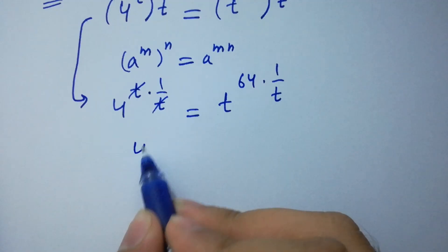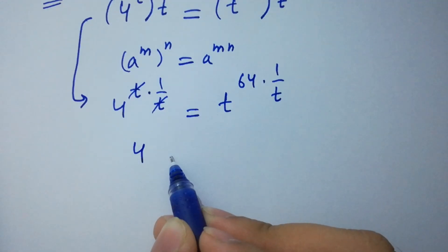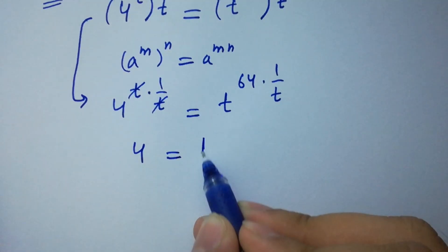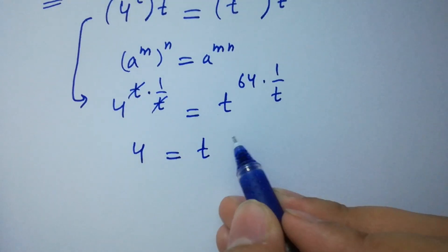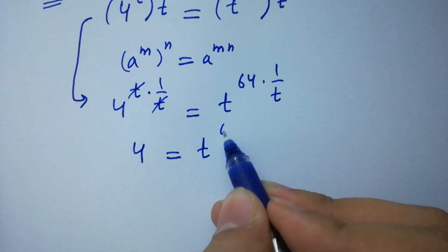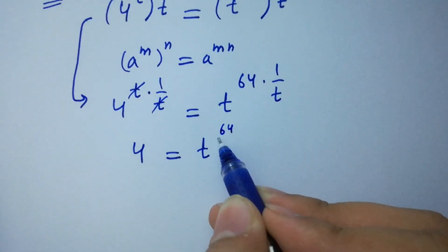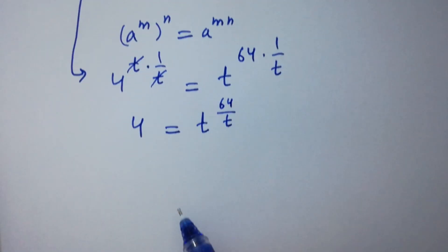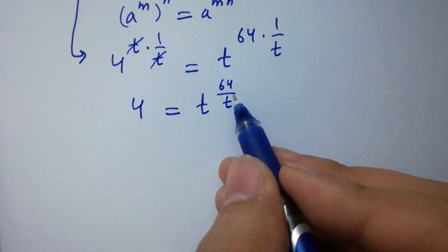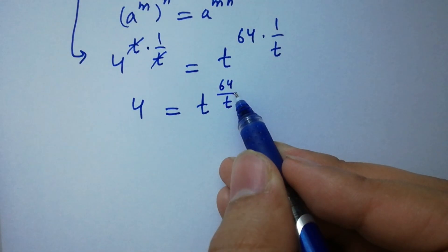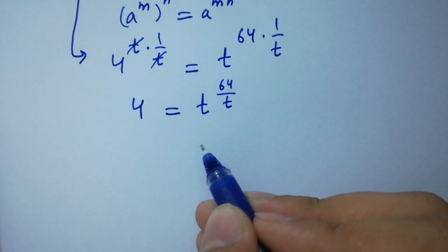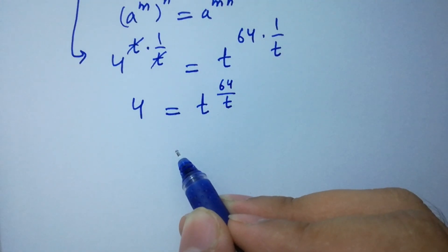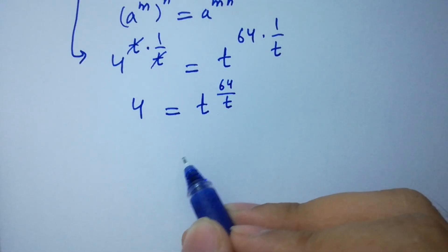We have 4 equal to t to the power 64 over t. To cancel this 64, take power 1 over 64 on both sides.